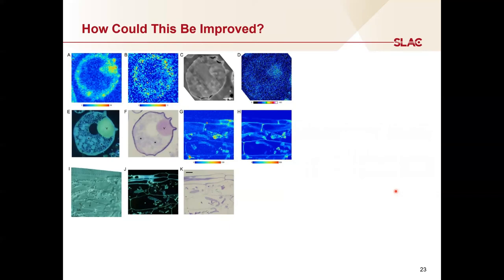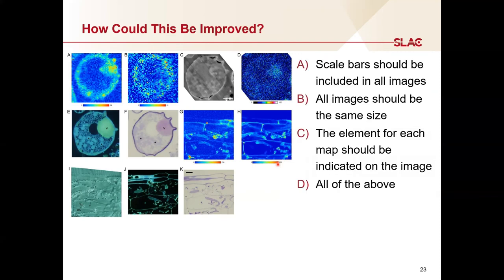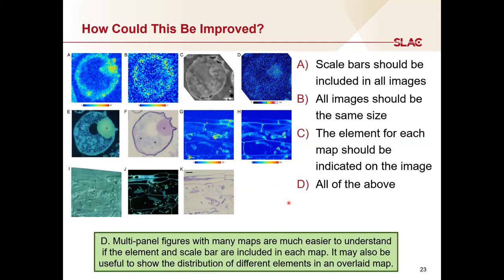Now let's move to some imaging examples. Here we have maps of the fluorescence of different elements from two samples — panels A through F are one sample, and panels G through K are another. The answer is D — all of the above. Scale bars should be included in all the images. All the images should be the same size — you can see that E is slightly narrower than A, and I is slightly taller than J. The elements for each map should be indicated on the image. These multi-panel images are much easier to understand if scale bars and elements are included in each map. Of course, if you're showing maps, they should definitely be the same size, otherwise your scale bars are meaningless.